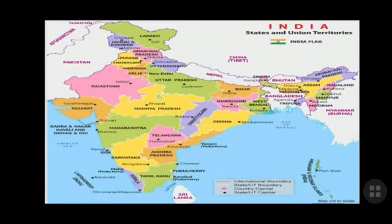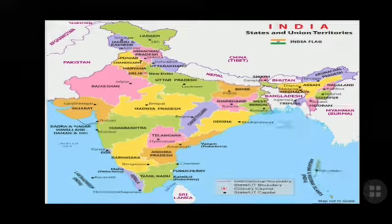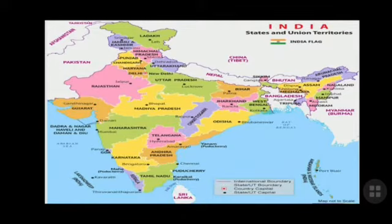Two other important islands are Lakshadweep and Andaman and Nicobar Island, and we will see more about them in detail. This is the political map of India, showing all 28 states and 9 union territories.